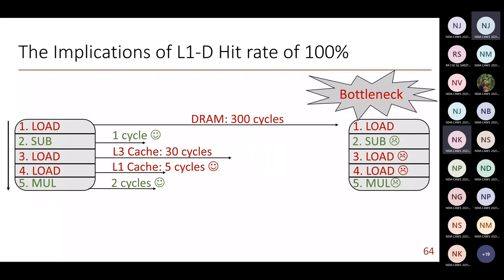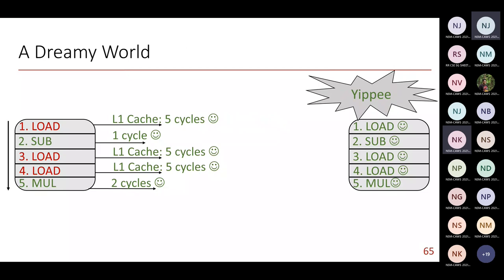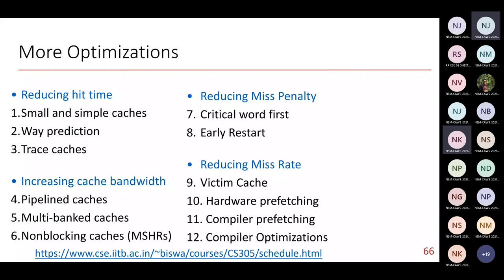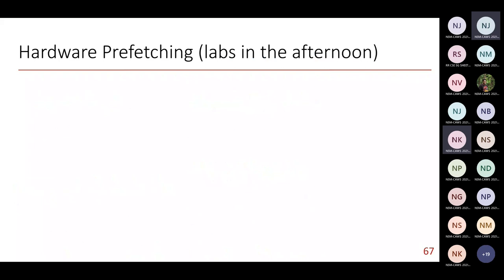There are many other cache optimizations you can find in standard textbooks or on the speaker's course webpage — we won't go into all of them in the interest of time. For the next 15 minutes, we'll discuss something you'll use in the afternoon labs: hands-on exercises on caching and hardware prefetching, a technique widely used in modern processors to mitigate the memory wall problem.